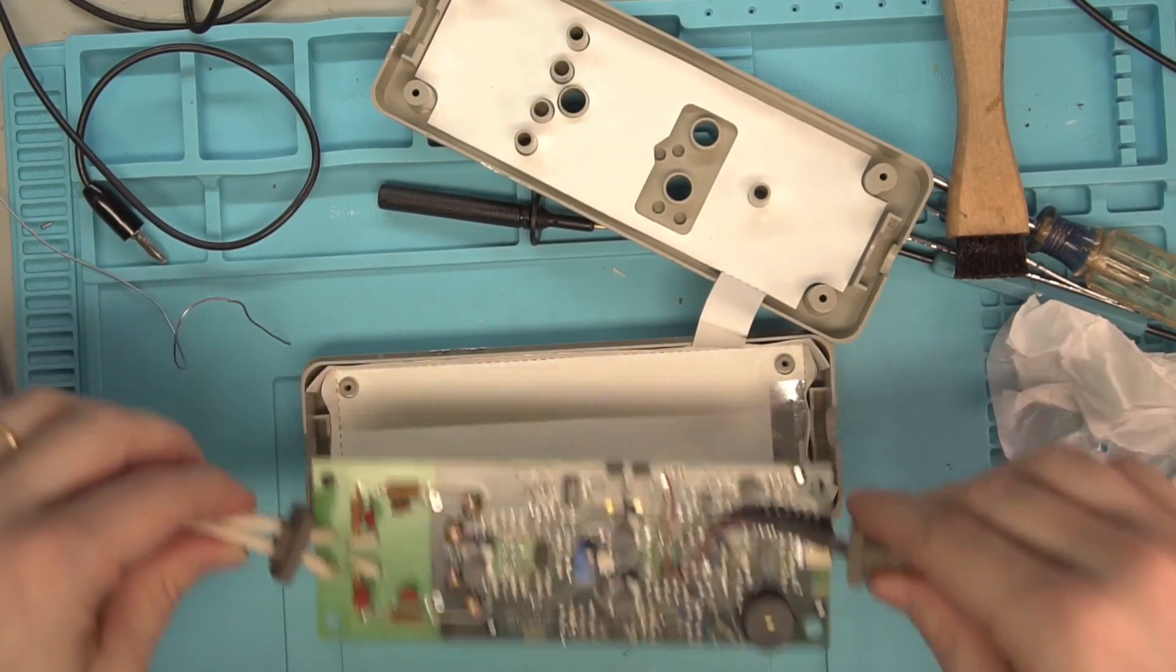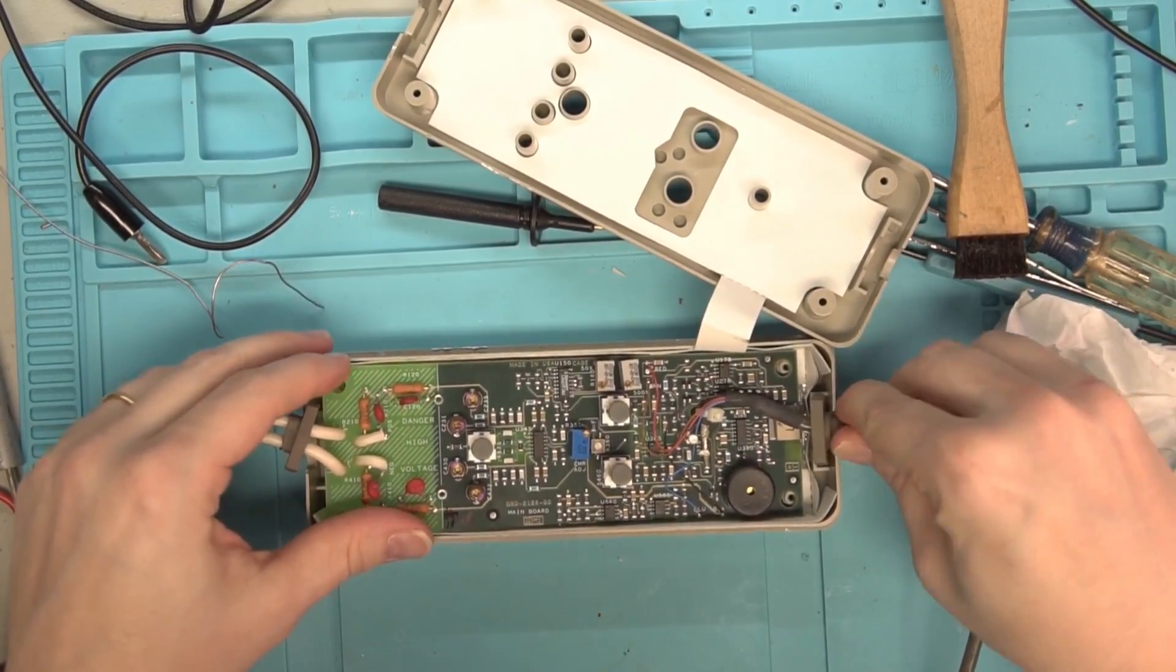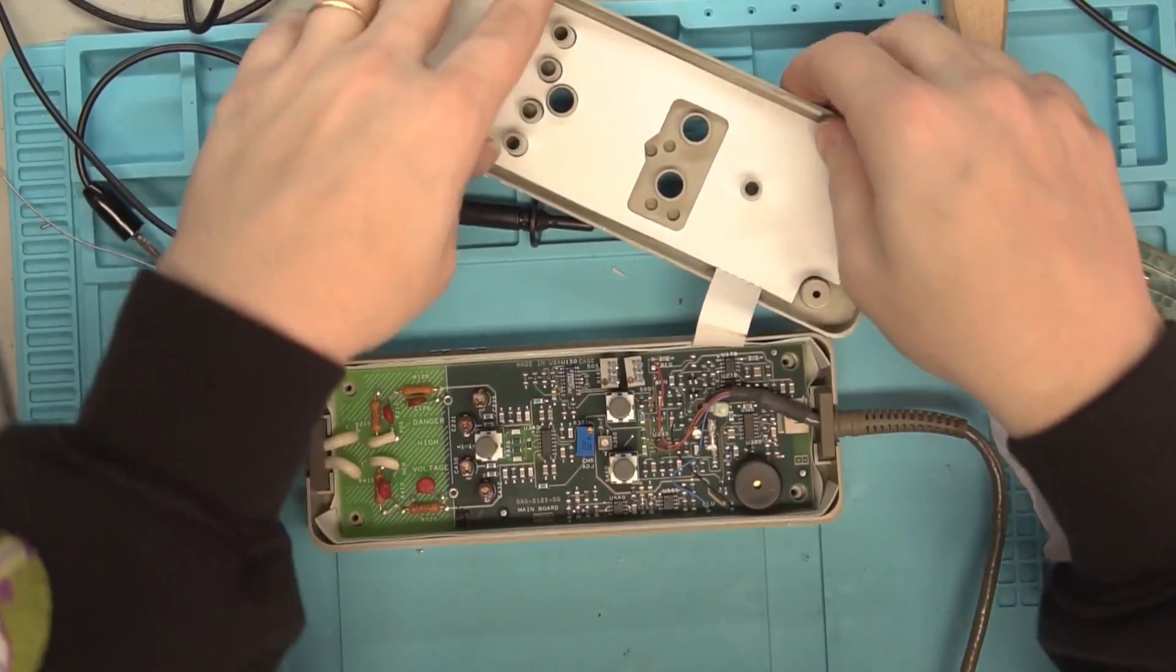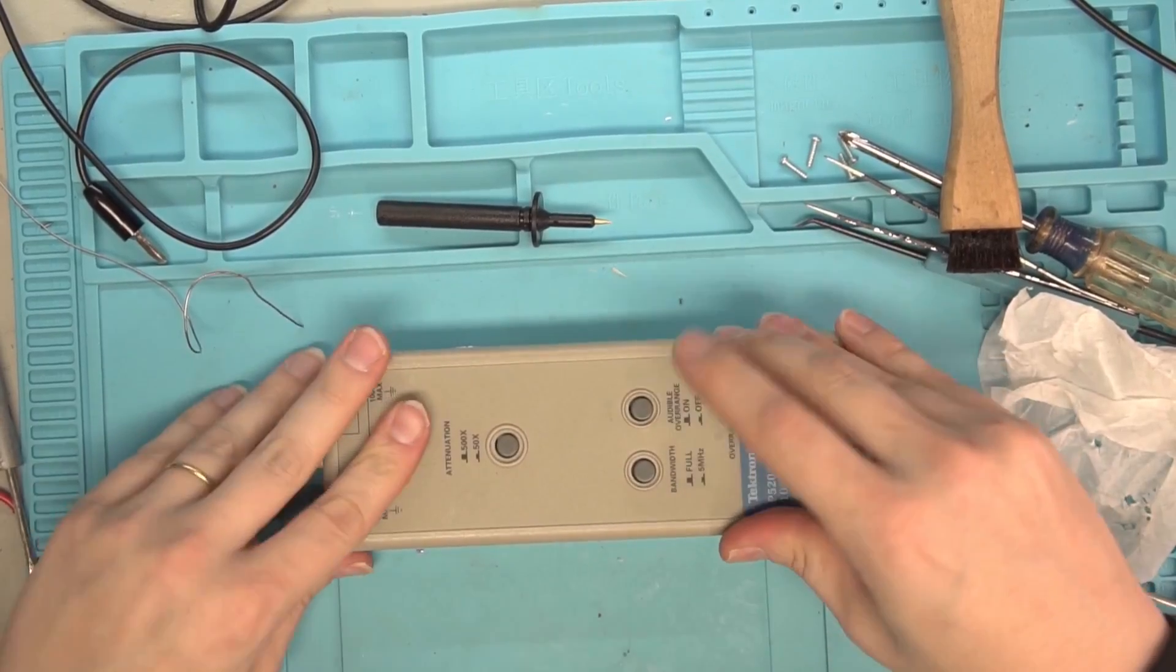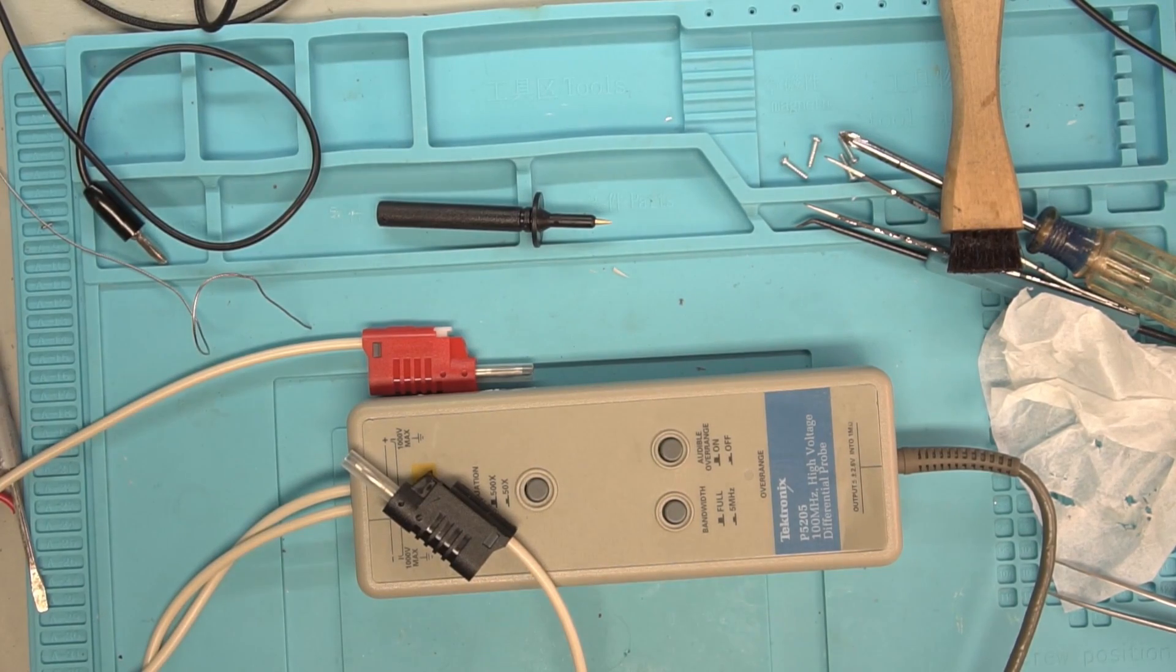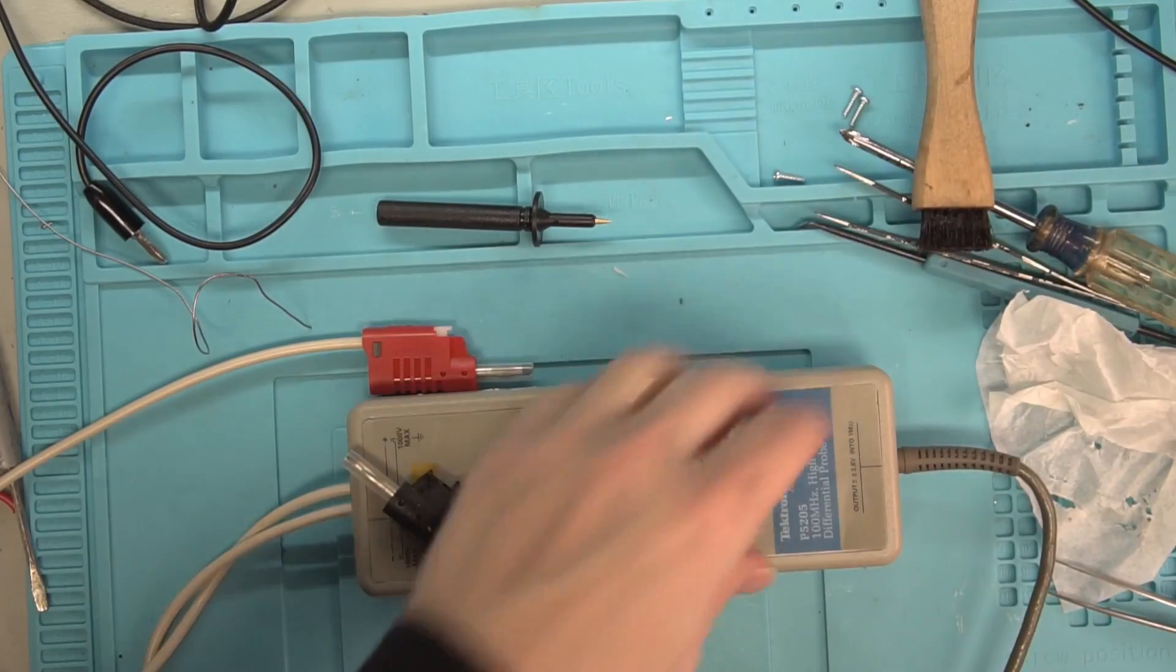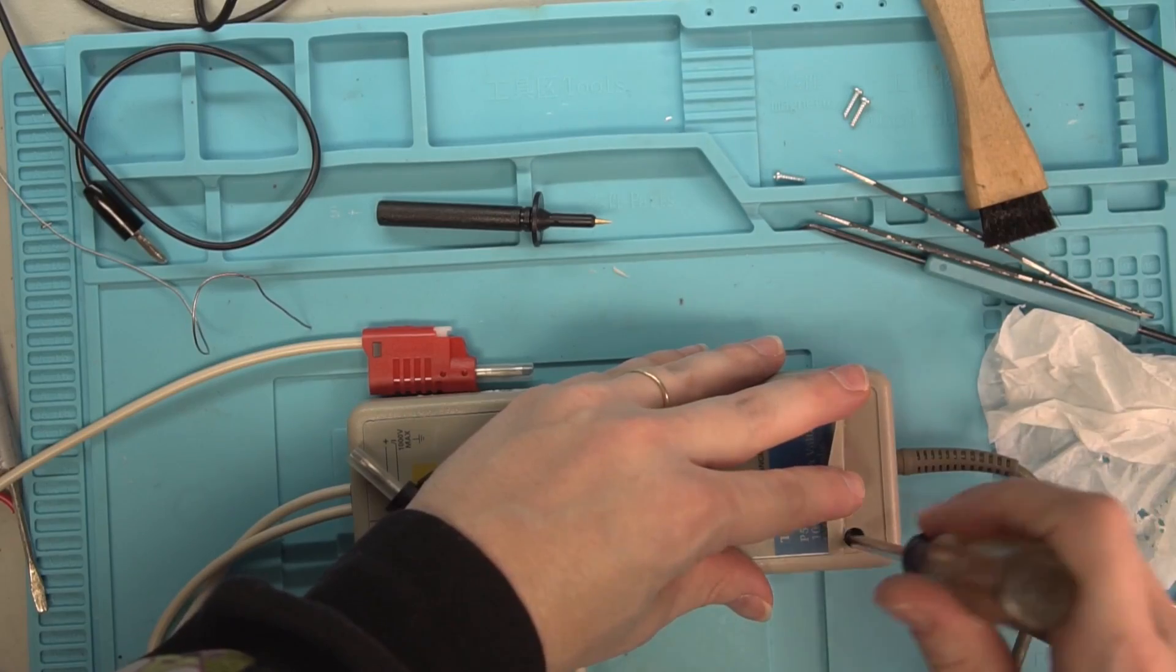Okay, so now let's just slide this guy back into the housing here. Get these over moldings back in there and then flip it back over. And now we have a diff probe that actually has some connectors on the end of it. Let's put at least one screw in it and test it out.